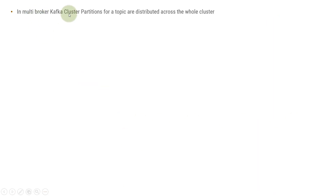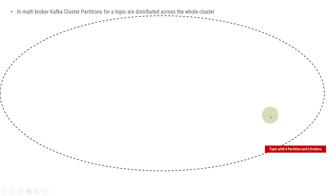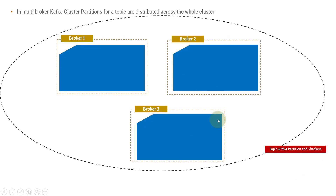In a multi-broker Kafka cluster, partitions for a topic are distributed across the whole cluster. In a production environment, we always use a Kafka cluster with more than one broker. In that case, the partitions will be distributed across the whole ecosystem and can be present on different nodes. For example, consider a Kafka cluster with a single topic having four partitions and three brokers — meaning three machines are running three different Kafka servers.